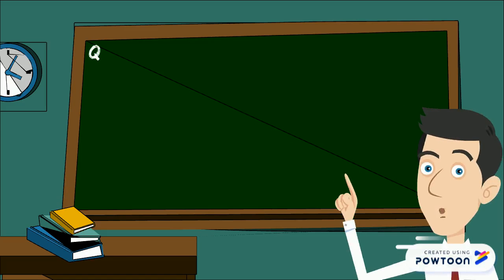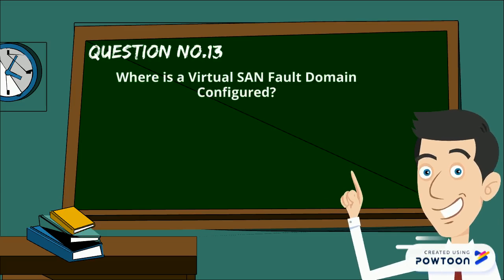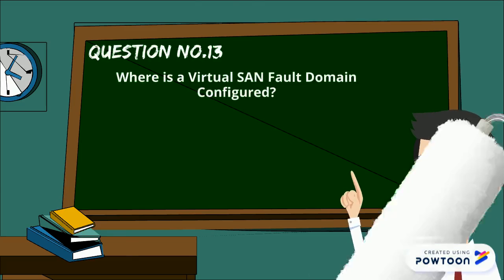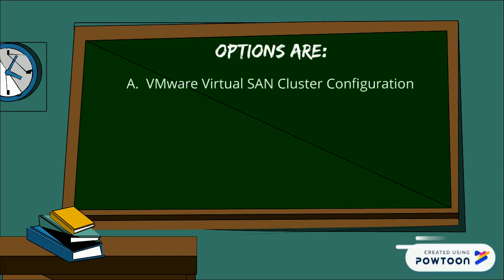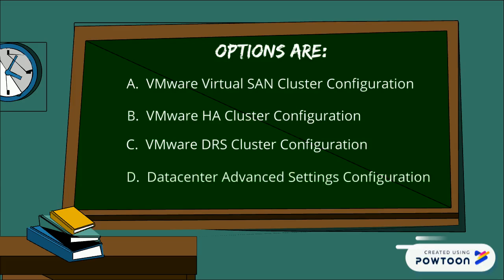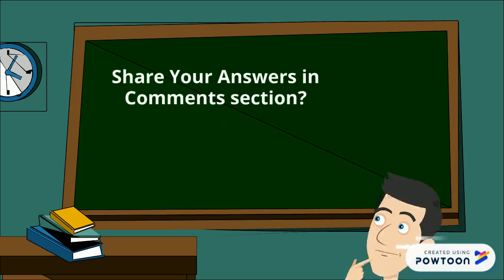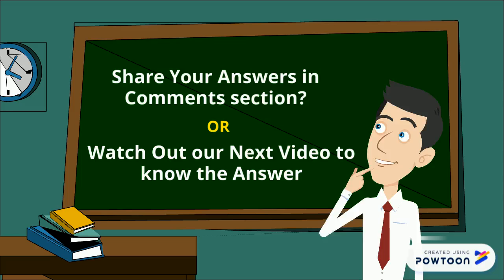Here is question number 13: where is a virtual SAN fault domain configured? Your options are: A) VMware vSAN cluster configuration, B) VMware HA cluster configuration, C) VMware DRS cluster configuration, D) data center advanced settings configuration. Share your answers in the comment section or watch our next video to know the answer.